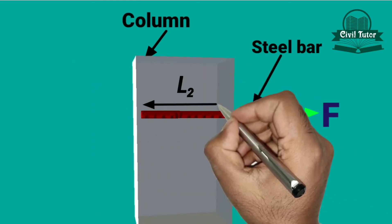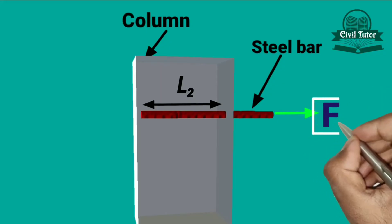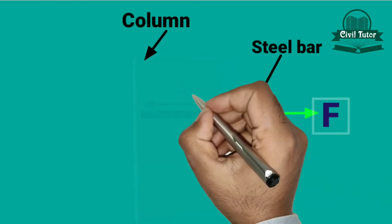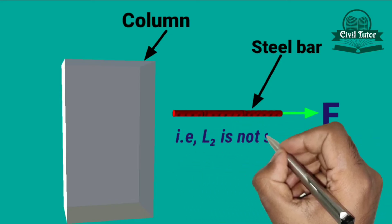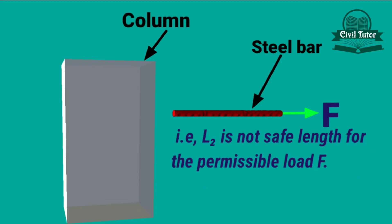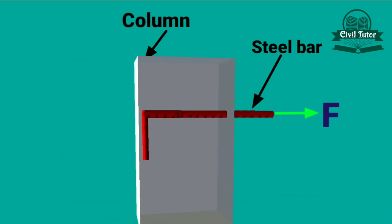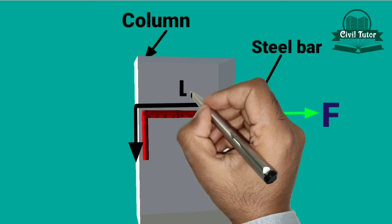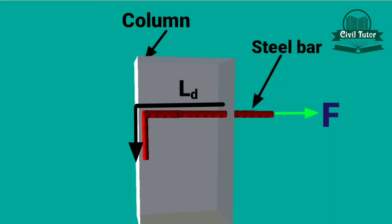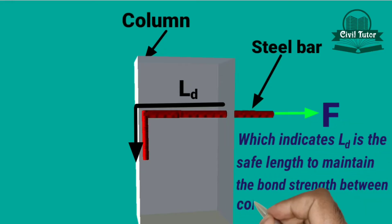Now let's increase the length of the bar inside the column to L2 and again apply the force F. Suppose the bar again comes out of the column — that is, length L2 is also not a safe length for the permissible load F. Now let's increase the length to LD, and assume the bar does not come out this time, which indicates LD is the safe length to maintain the bond strength between column and steel bar.